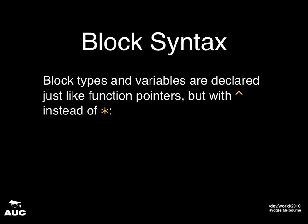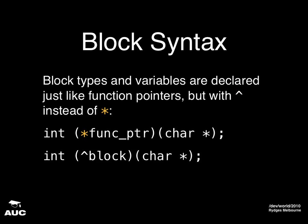So how do blocks work? Let's find out how to write them. A block variable and a block type are just like function pointers, only you use a caret instead of an asterisk. Our first example is a function pointer that takes a C string and returns an int. A block that does the same thing is pretty much exactly the same — just with a caret where the asterisk was.